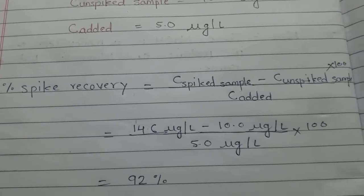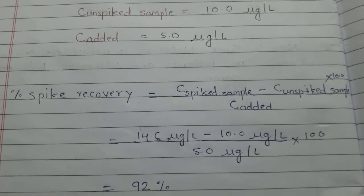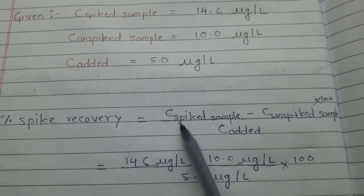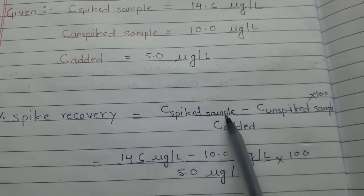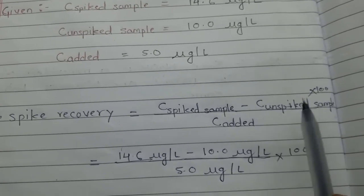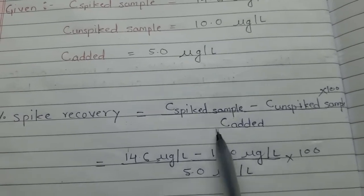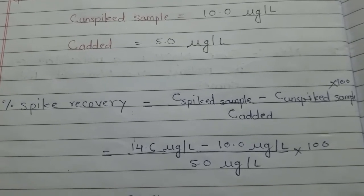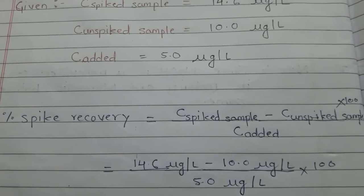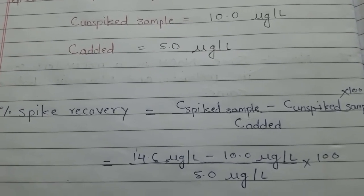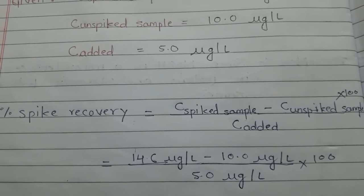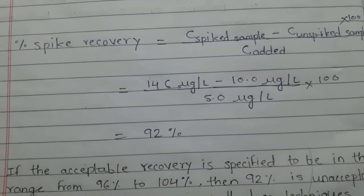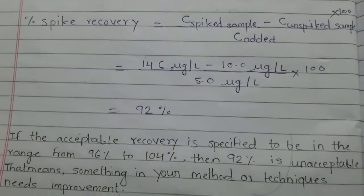We only need to know the formula for finding out the percent spike recovery, which is: concentration of spiked sample minus concentration of unspiked, divided by concentration added, into 100. By knowing this simple formula we can easily find out the percent spike recovery — here we got 92 percent.